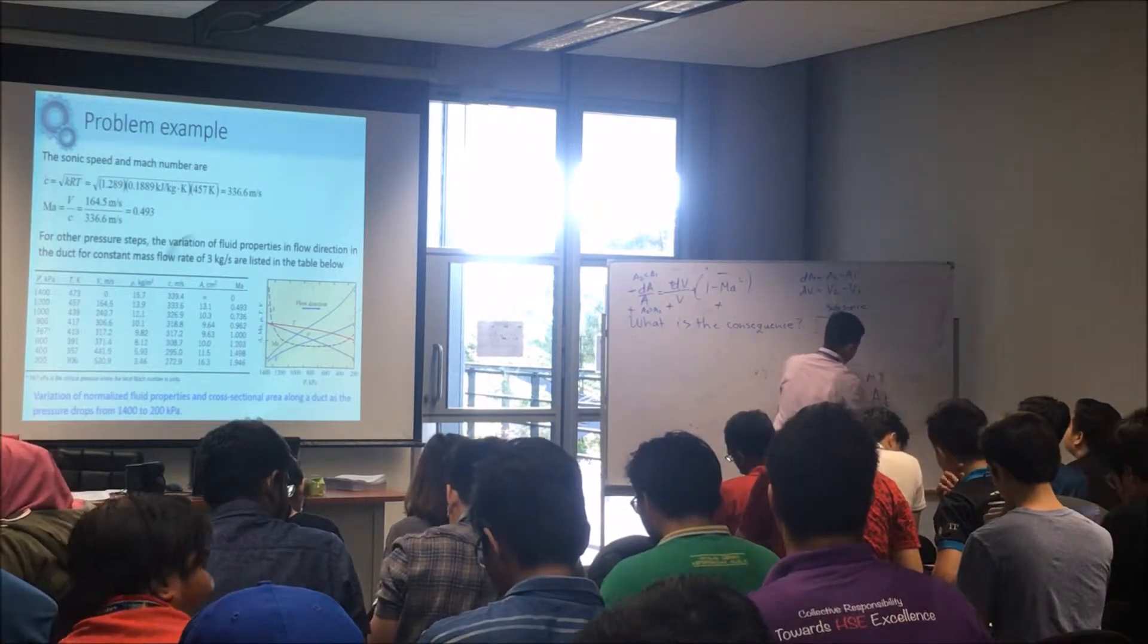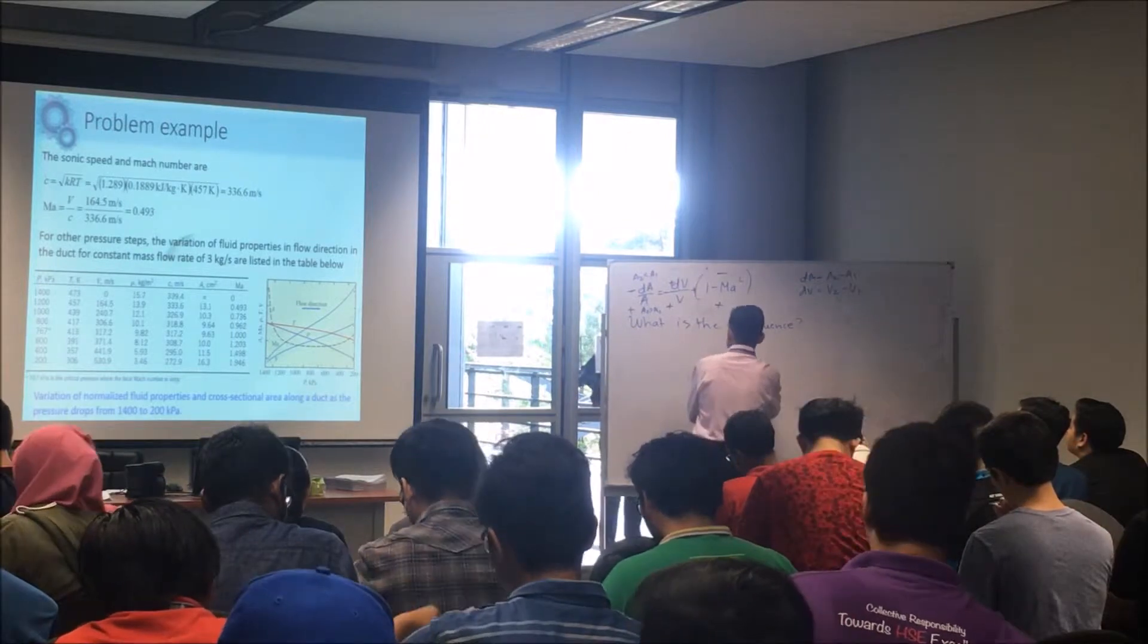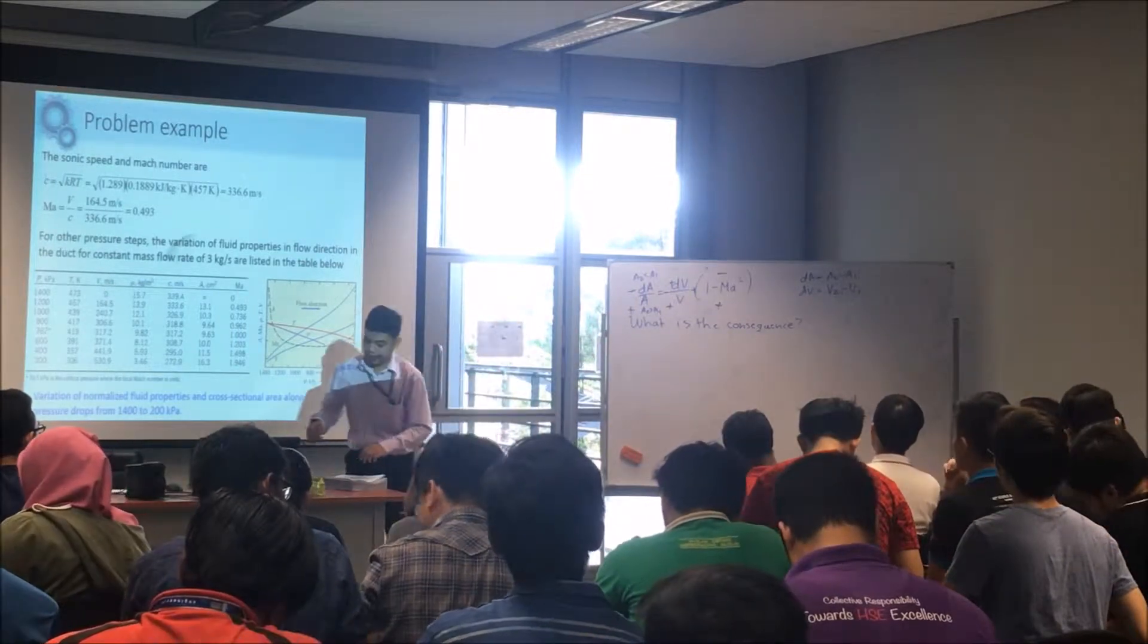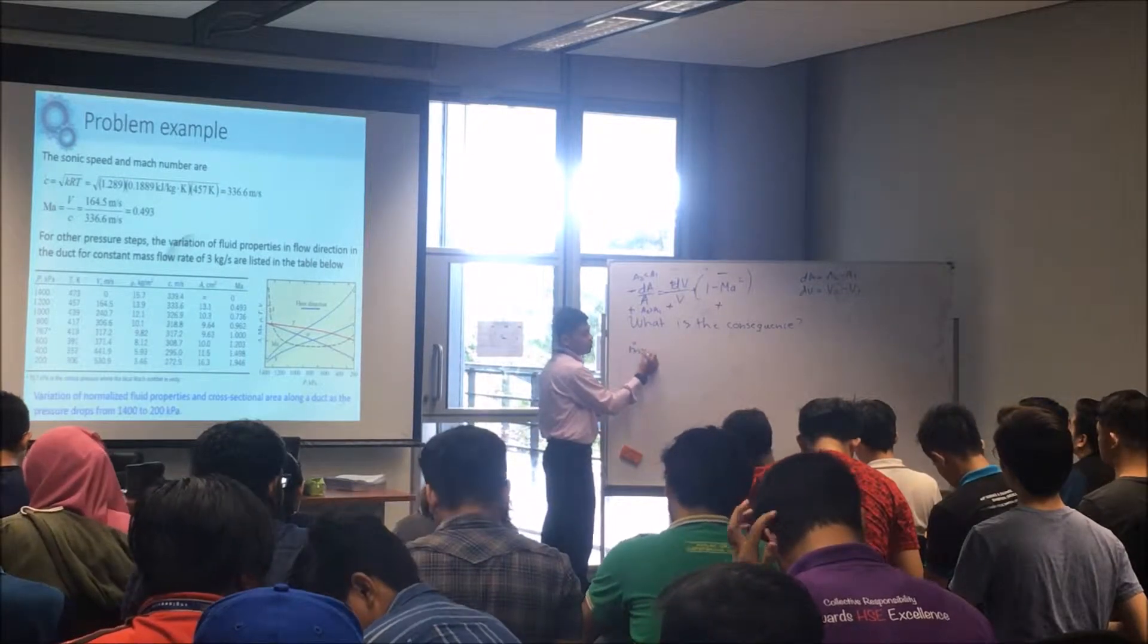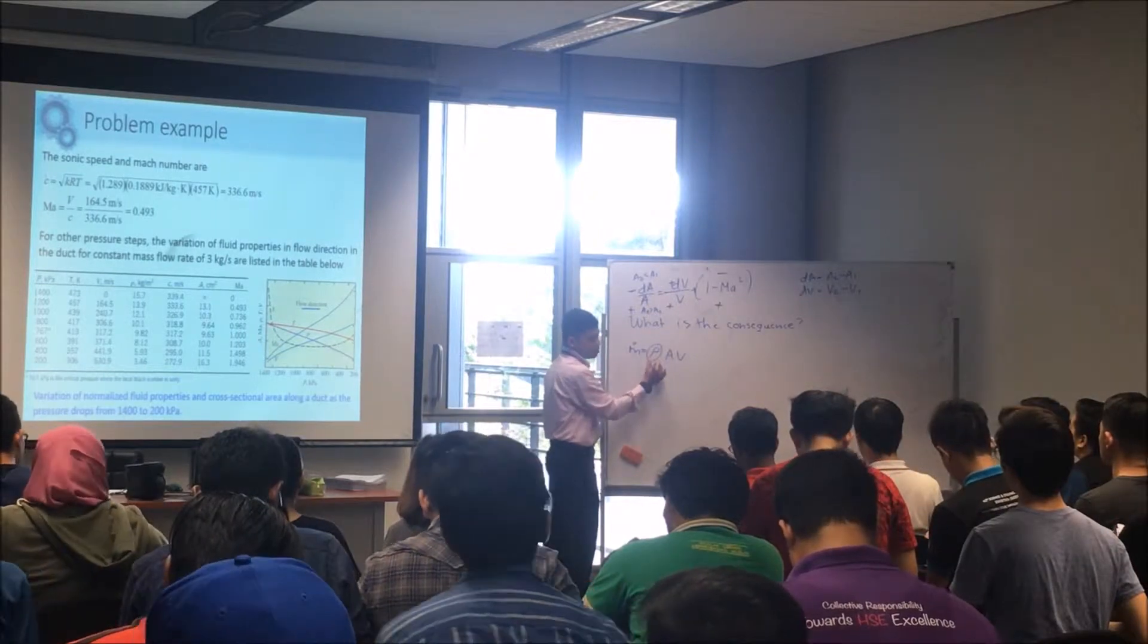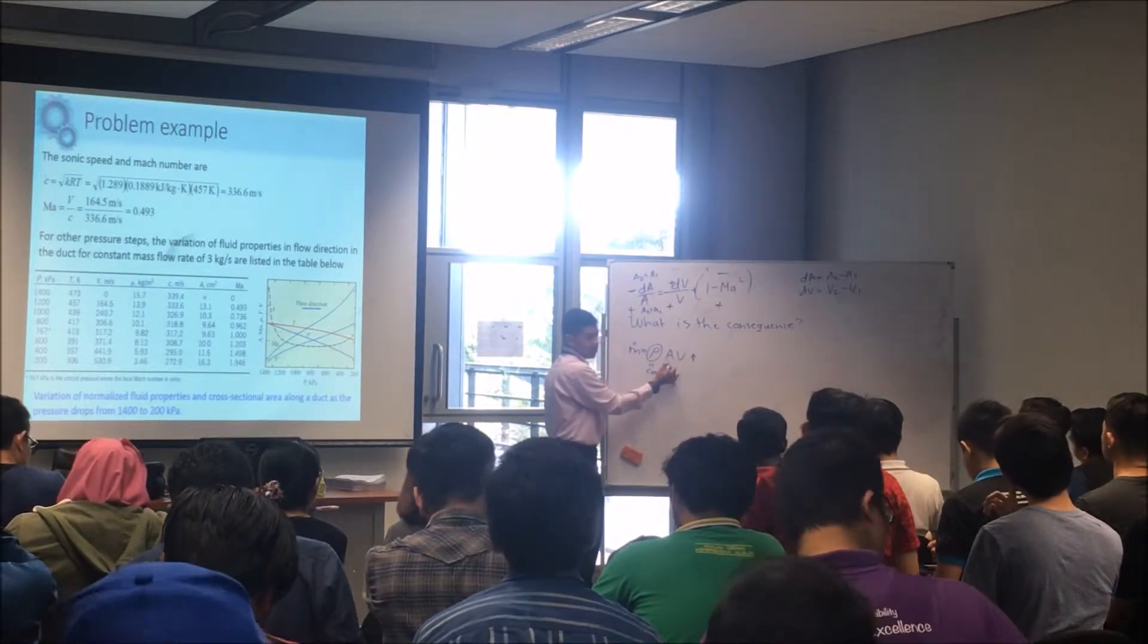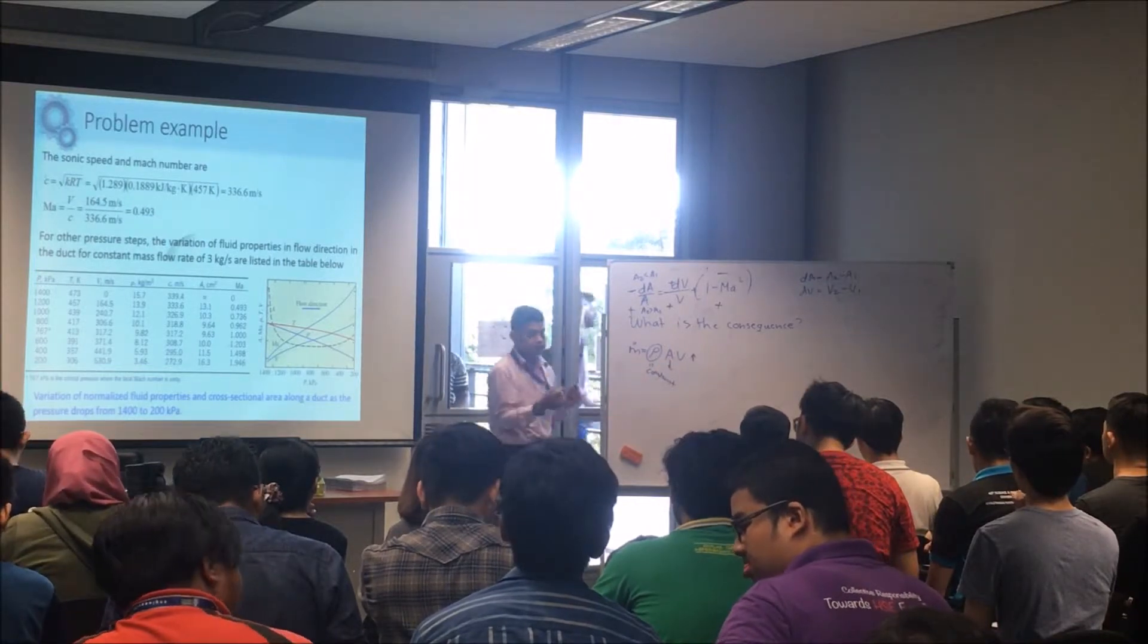So if you want to increase the velocity, looking at the mass flow rate - mass flow rate is given as rho A V. For incompressible fluid, this one is constant. When this one is constant, if you want to increase the velocity, the only way you can do it is by increasing the area.